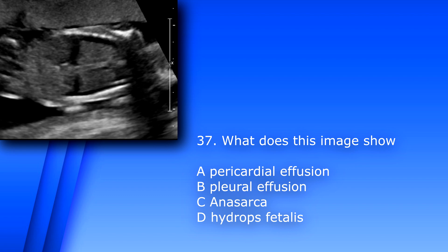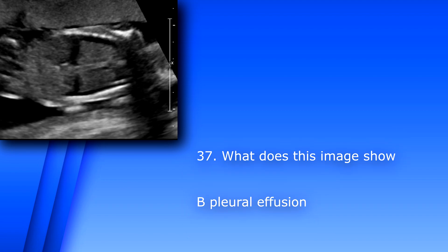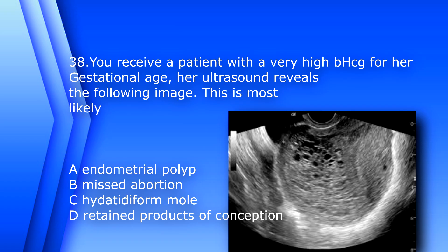Question 37: What does this image show? A) pericardial effusion, B) pleural effusion, C) anasarca, or D) hydrops fetalis. There is no picture of a heart in this image so you cannot see a pericardial effusion. This is a coronal view of the chest — you can see both lungs and a good amount of fluid around the lungs. The answer is B, pleural effusion.